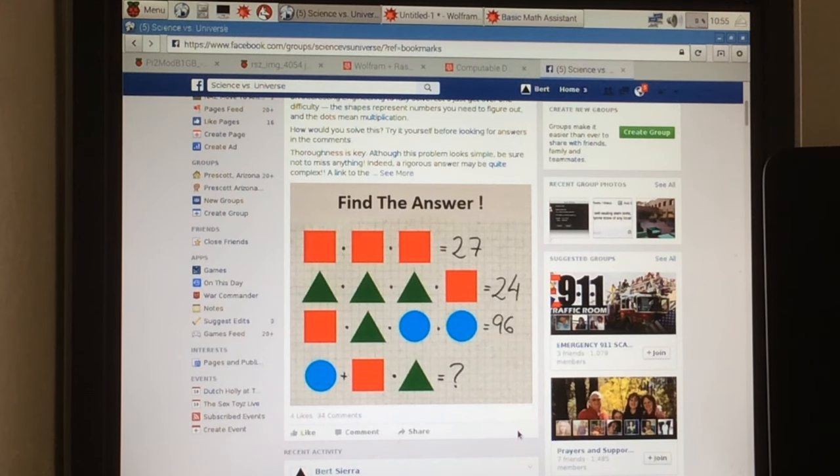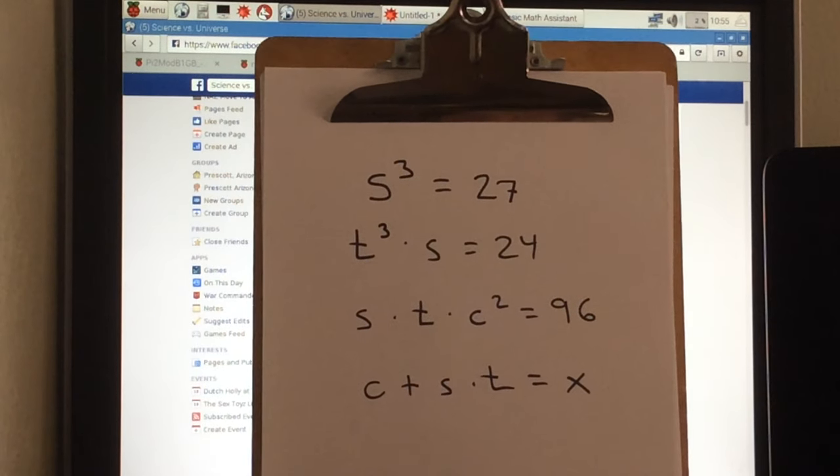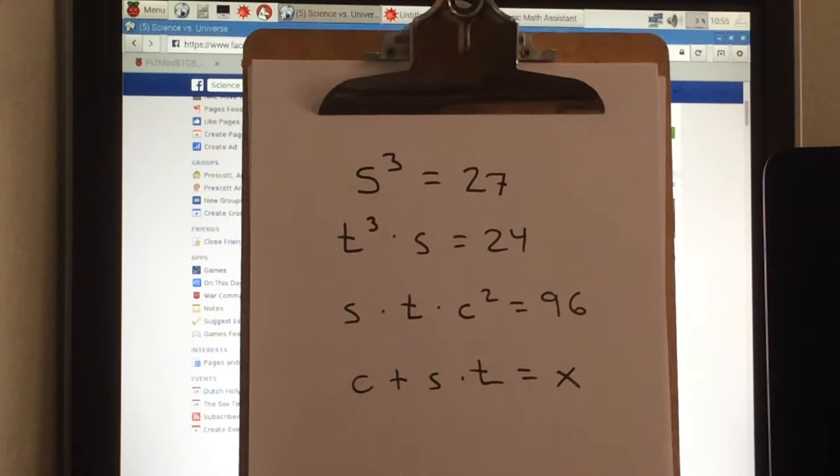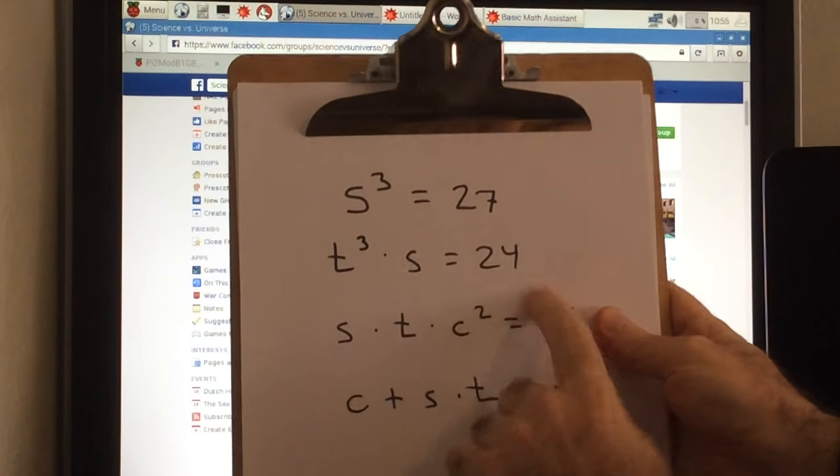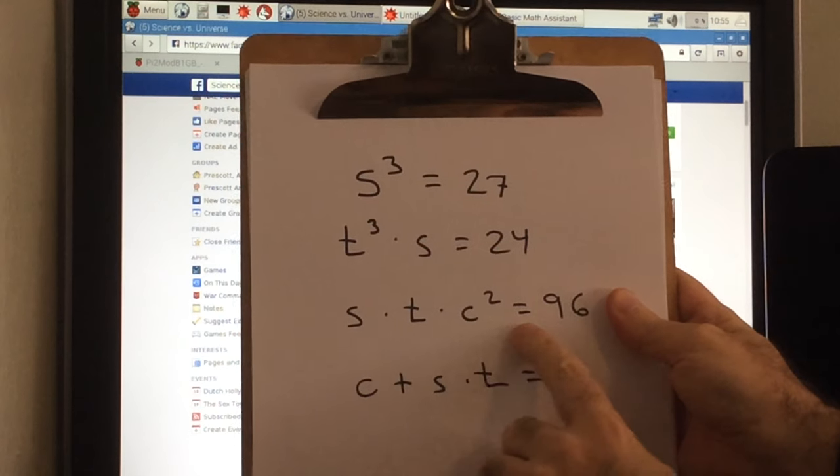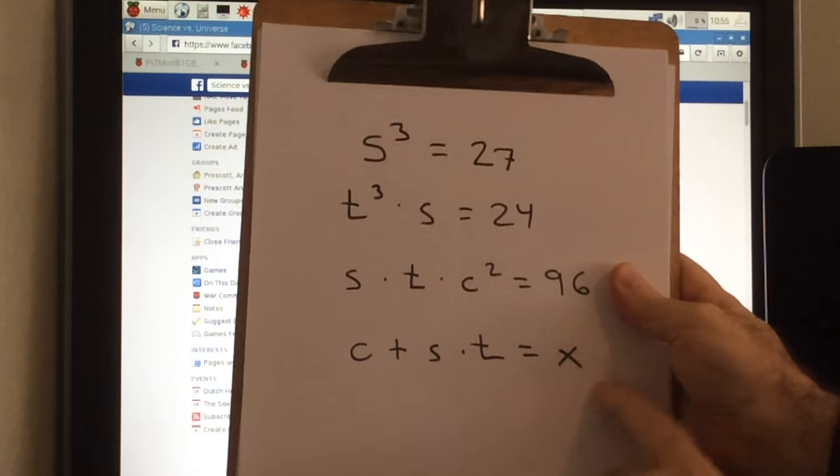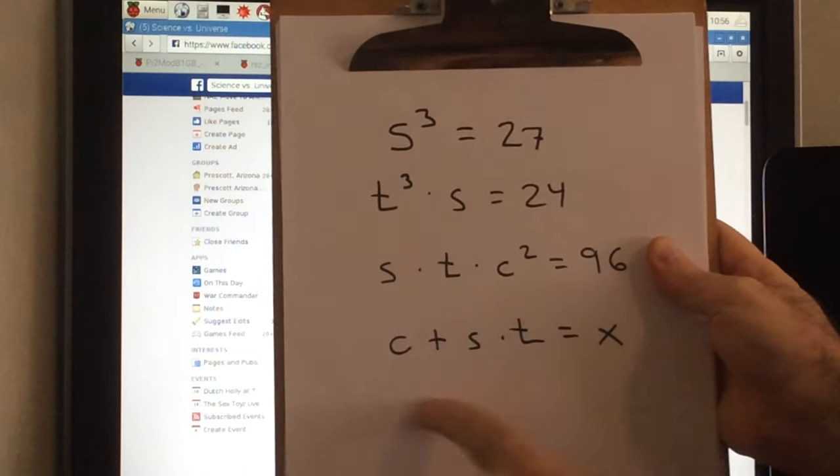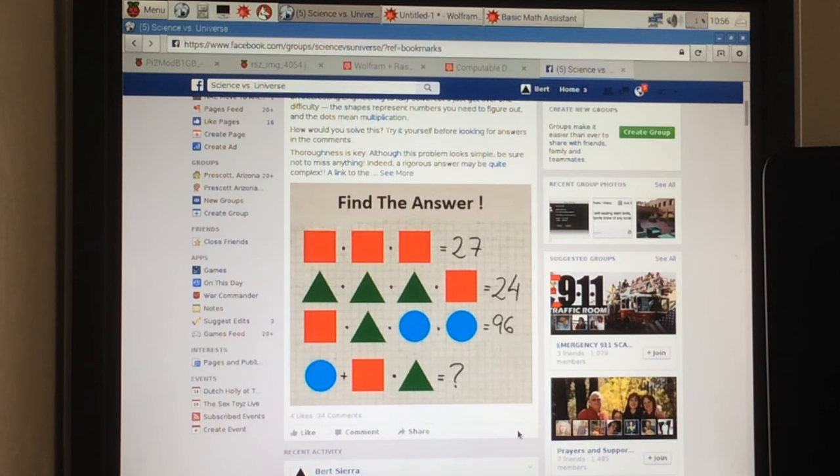Once we have that, we can figure out this next line. Now, we have those two things, we're introducing a circle thing, comes up to 96. We take the circle, and we add it to the product of the square times the triangle, and what's the answer? Why don't you pause the video and see if you can solve this, but we're actually going to now build this into Mathematica. And incidentally, if it's not clear, the equivalent set of algebraic expressions would be this. S cubed equals 27. T cubed times S is 24. S times T times C squared is 96. Take C, add that to S times T, and that must be equal to X.